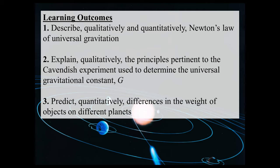Learning outcomes for today are: one, describe qualitatively and quantitatively Newton's Law of Universal Gravitation; two, explain qualitatively the principles pertinent to the Cavendish experiment used to determine the Universal Gravitational Constant, capital G; and three, predict quantitatively differences in the weight of objects on different planets — you'll practice number three in the assignment attached to this lesson.